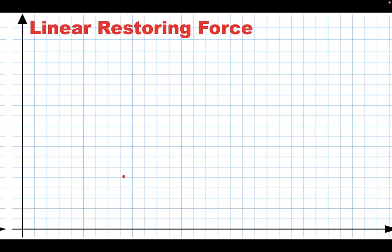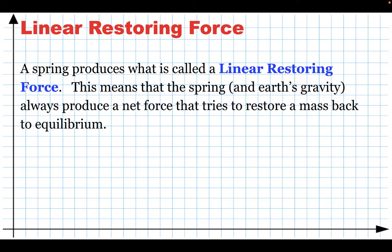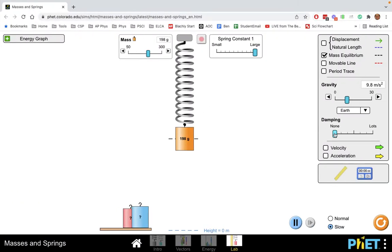So if we have a spring, it produces what is called a linear restoring force. What this means is that the spring, together with Earth's gravity, produces a net force that always tries to keep a mass at equilibrium. So let me show you what I mean by that. Let's suppose I have a spring. I'm going to do this. And I've got 200 grams hanging on this spring.